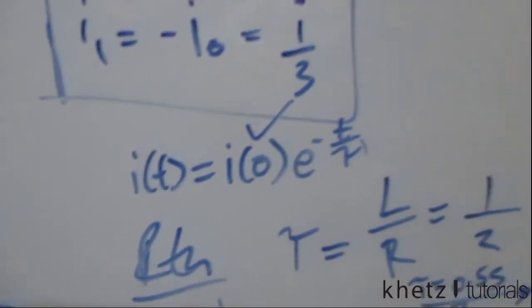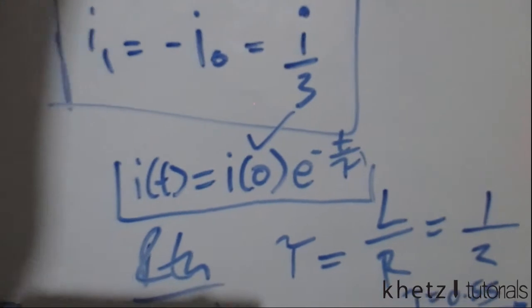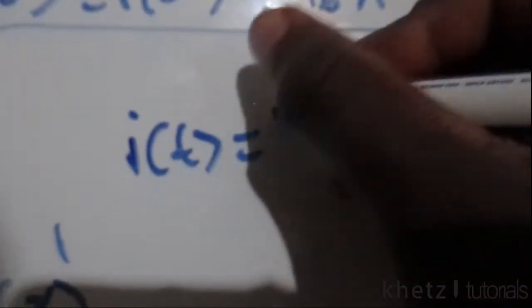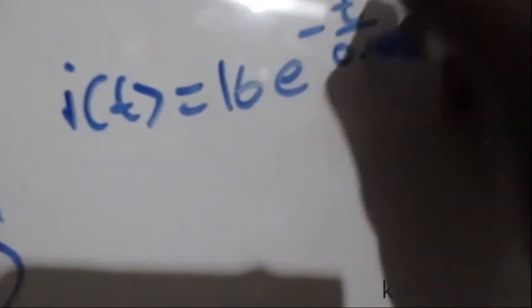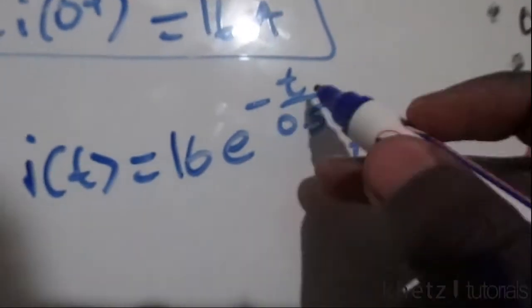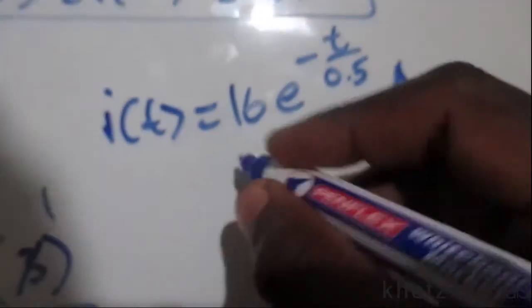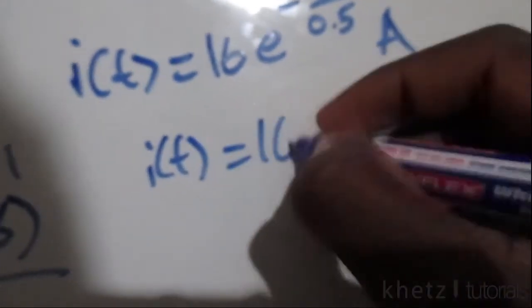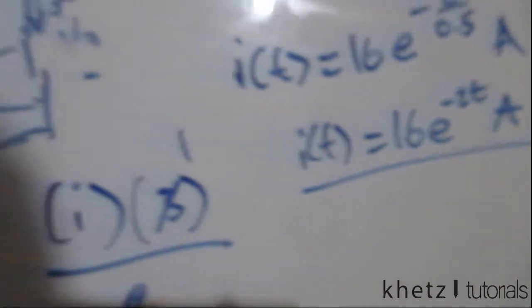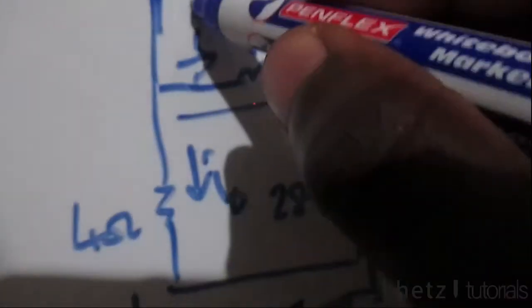Substituting all the values into the formula: i(t) equals 16 e to the minus t divided by 0.5. Simplifying, one divided by 0.5 is two, so i(t) equals 16 e to the minus 2t amperes for time greater than zero.